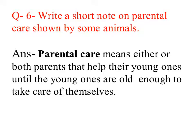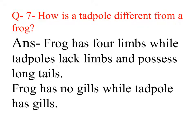Question number 6: Write a short note on parental care shown by some animals. Answer: Parental care means either or both parents help their young ones until the young ones are old enough to take care of themselves. Question number 7: How is a tadpole different from a frog? A frog has four limbs while tadpoles lack limbs and possess a long tail. A frog has no gills while tadpoles have gills for breathing.